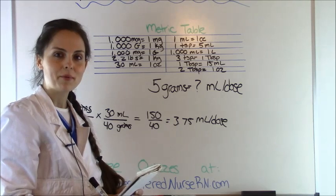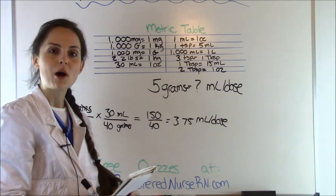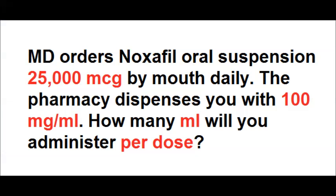So you're going to be giving 3.75 milliliters per dose out of what the pharmacy gave you to equal the doctor's order of five grams. That's how you solve that problem. Let's move to problem two: MD orders Noxafil oral suspension 25,000 micrograms by mouth daily. The pharmacy dispenses you with 100 milligrams per mL. How many mLs will you administer per dose?